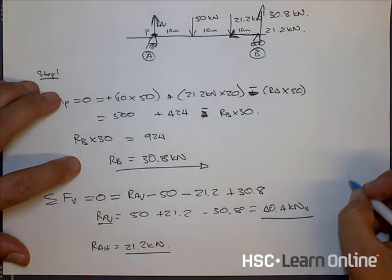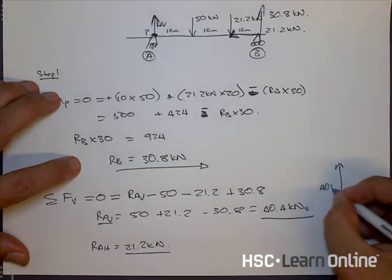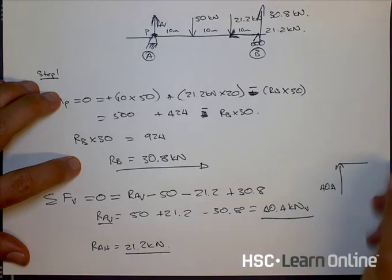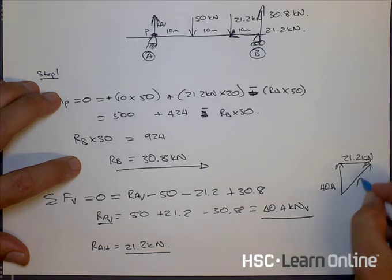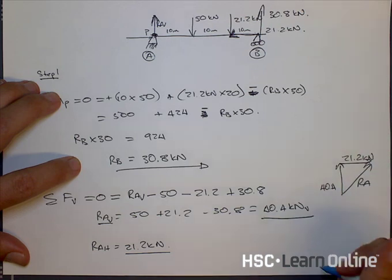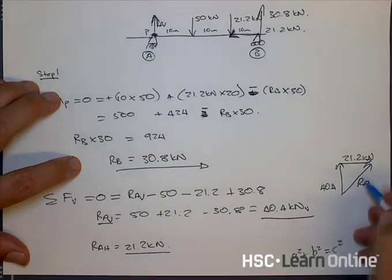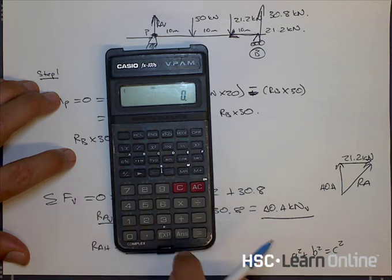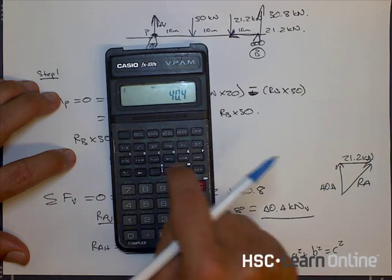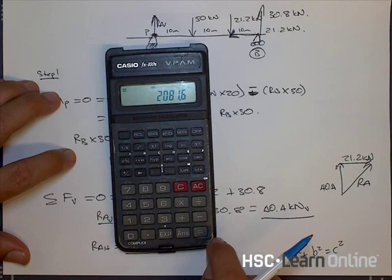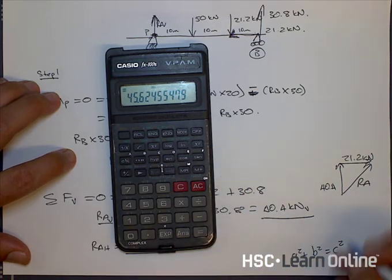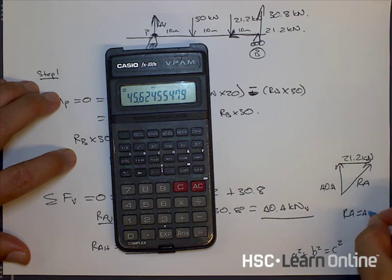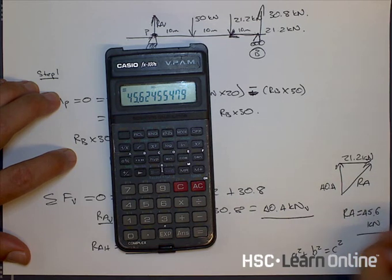So RA vertical is equal to 40.4 and RA horizontal is equal to 21.2. And what you'll simply now do is say, well, if I've got a vertical force of 40.4 and I've got a horizontal force of 21.2 kilonewtons, my resultant force, which is RA, is going to be the square root of those squared. So A squared plus B squared equals C squared. So let's just do that quickly. 21.2 squared plus 40.4 squared equals, and find the square root of that, equals RA, its magnitude is 45.6 kilonewtons, or thereabouts.